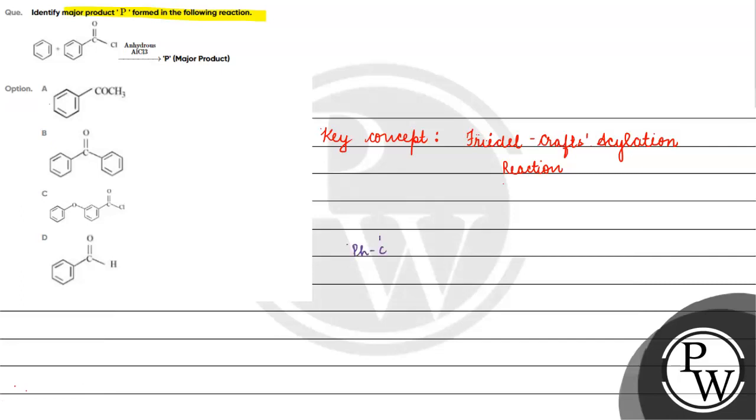We have a phenyl group with a C double bond, Cl reacting with AlCl3.